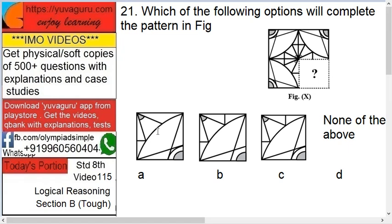Which of the following options will complete the pattern in the figure? This pattern, this is figure X, means question figure. Now, which of the following: a, b, c, and d is none of the above. Okay, so what you have to check over here is, see this short part. I think this here is definitely gone.